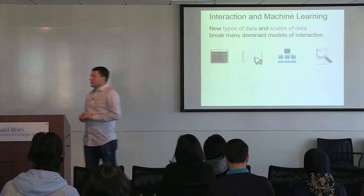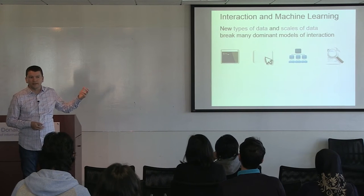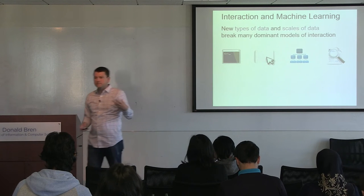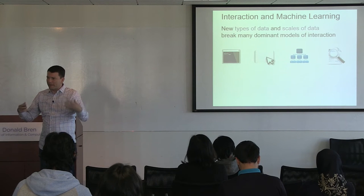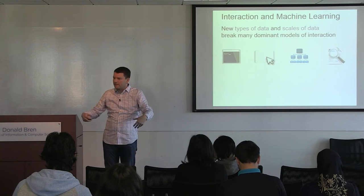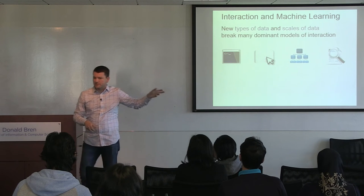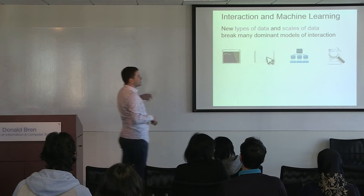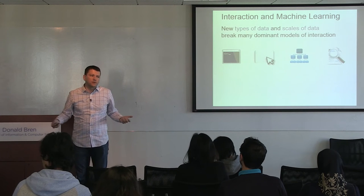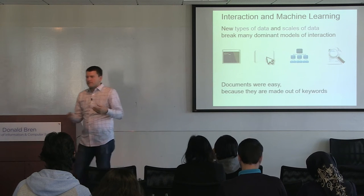A lot of our existing notion of how to interact with things is being fundamentally broken by new types of data and the scale of that data. In the beginning there were very few things and we could remember them — we typed them in by recall. Then there were too many, so we put them on screen and pointed at them. Then too many again, so we put them in hierarchies and browsed. Then too many, so we started using keywords. We've been getting by on keyword search for about 30 years. The problem is there's an increasing variety of data for which keywords are not an appropriate way to interact — there is no meaningful keyword to articulate the kinds of things you're trying to say.